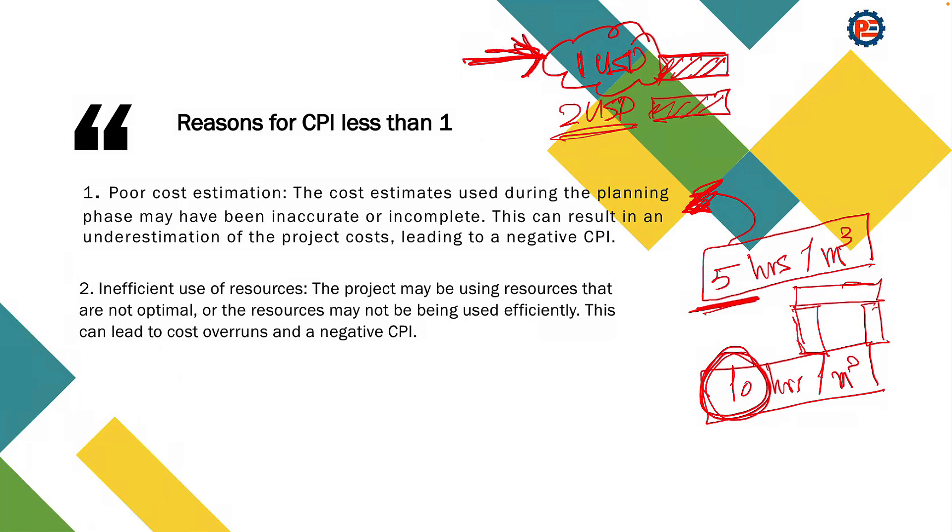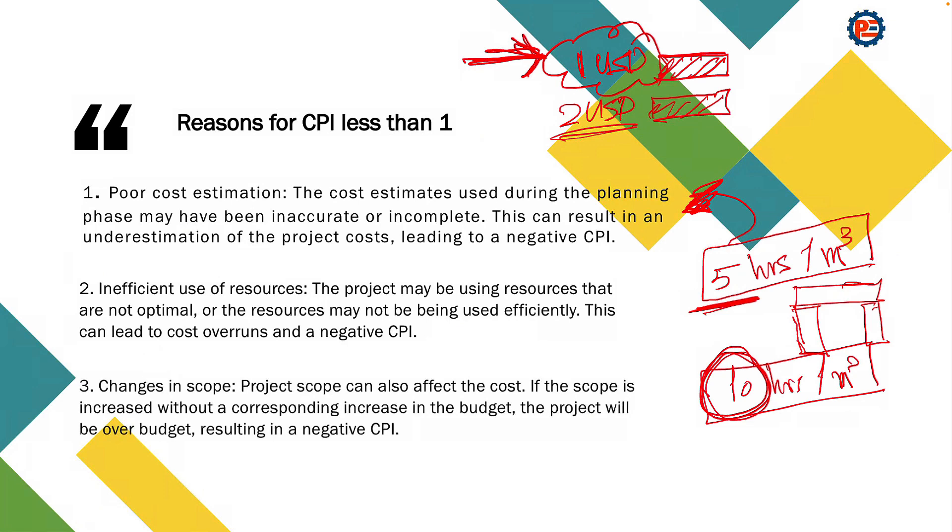What else could be the reasons of the CPI less than one? Changes in the scope. The project scope can also affect the cost. If the scope is increased without a corresponding increase in the budget, the project will be over-budget, resulting in a negative CPI.